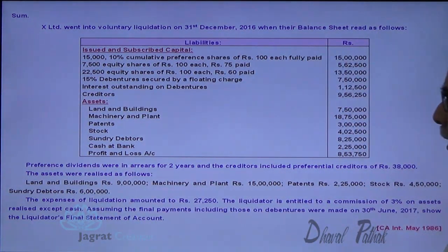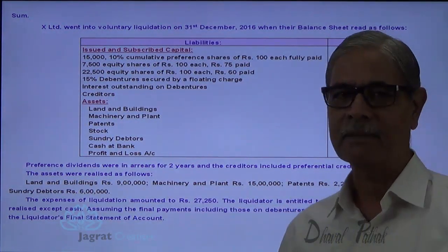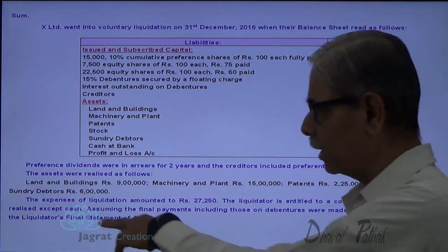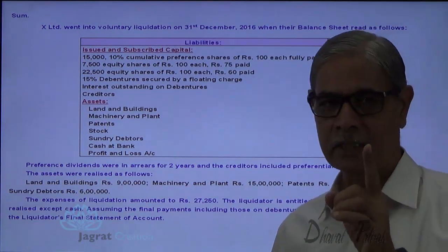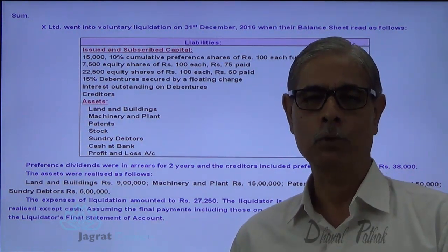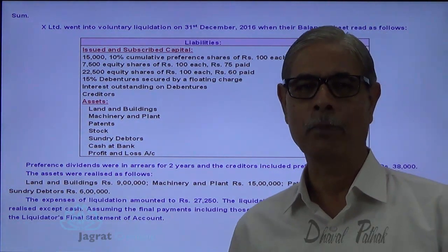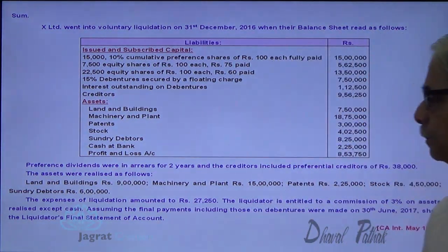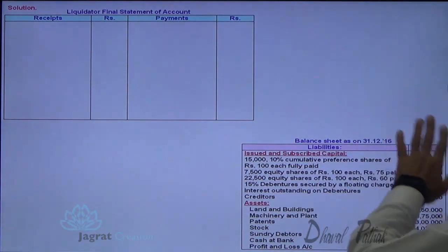Assets realized: land and building 9 lakhs, plant and machinery 15 lakhs, patents 2,25,000, stock, and debtors realized 6 lakhs. The expenses of liquidation amounted to 27,250. The liquidator is entitled to remuneration of 3% of the amount realized except cash. The final payment, including that to debenture holders, was made on 30th June 2017. I will now prepare the liquidator's final statement of account — receipts and payments. This is the balance sheet given to me.